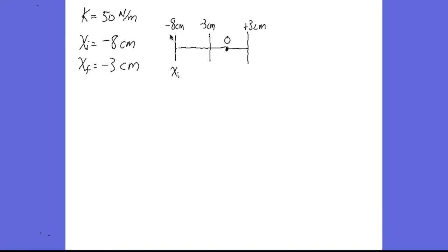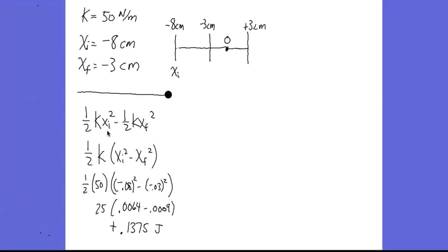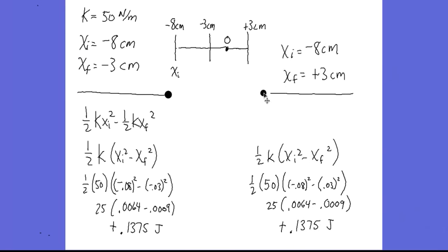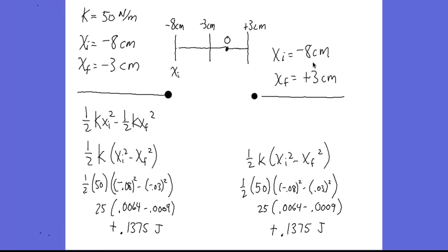In another example, the spring starts at a compression of 8 cm and moves to a compression of 3 cm. Using one half kx initial squared minus one half kx final squared, the work done is positive: 0.1375 joules, confirming that moving closer to equilibrium gives positive work. If instead the spring moves all the way past equilibrium to a stretch of plus 3 cm, the calculation still gives the same answer — because squaring removes the sign, so it doesn't matter whether those positions are positive or negative.